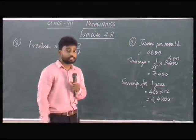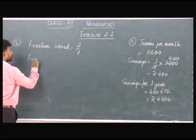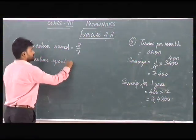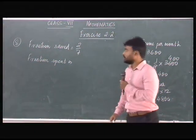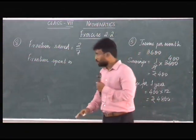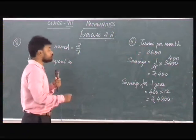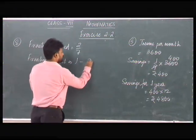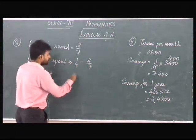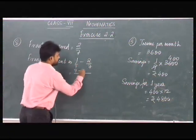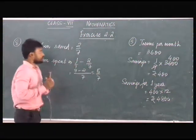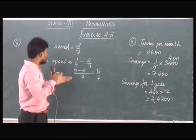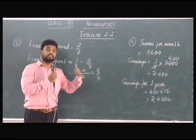Now we have to find out the fraction which he spends. The fraction spent will be: you know that the total fraction is equal to 1, so from 1 we subtract 2/7 — we can take this as 1/1 — to get the fraction he spends. So if he saves 2/7 of his income, that means he has spent 5/7 of the total income.